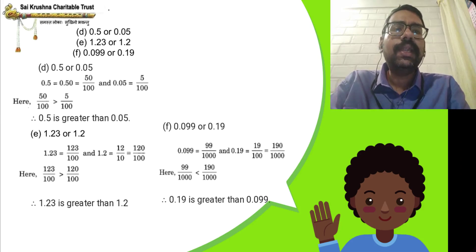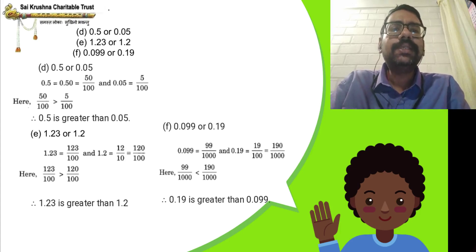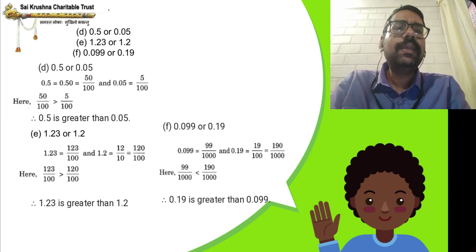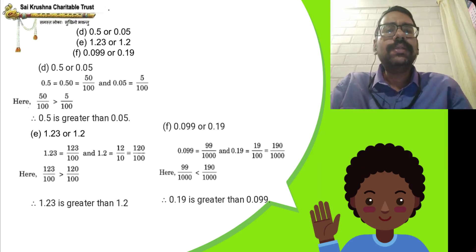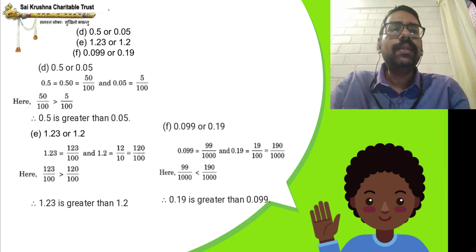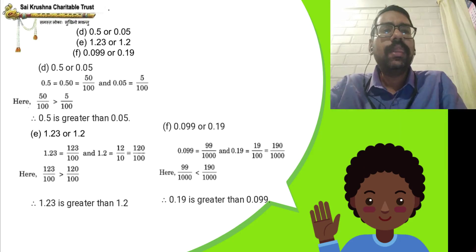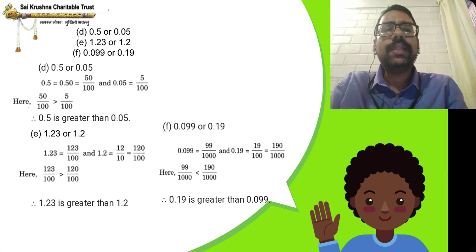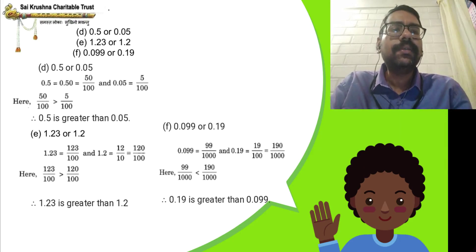Which is greater, 0.099 or 0.19? The easier method: comparing the whole number part, both have 0. In the tenths place, the first decimal has 0 and the second has 1. Since 1 is greater than 0, therefore 0.19 is greater than 0.099. You can also convert to like fractions, but this direct method is easier.